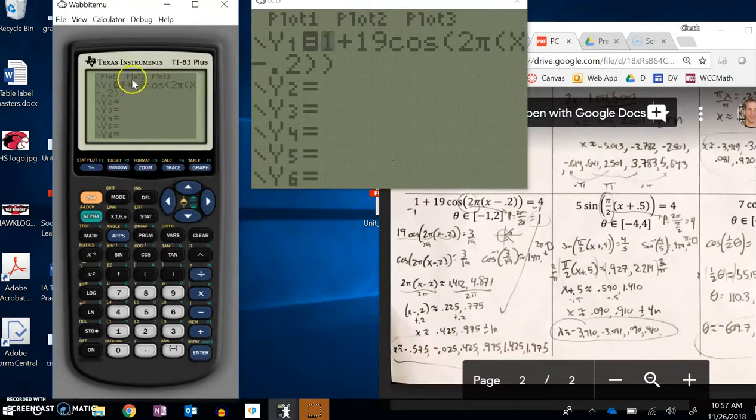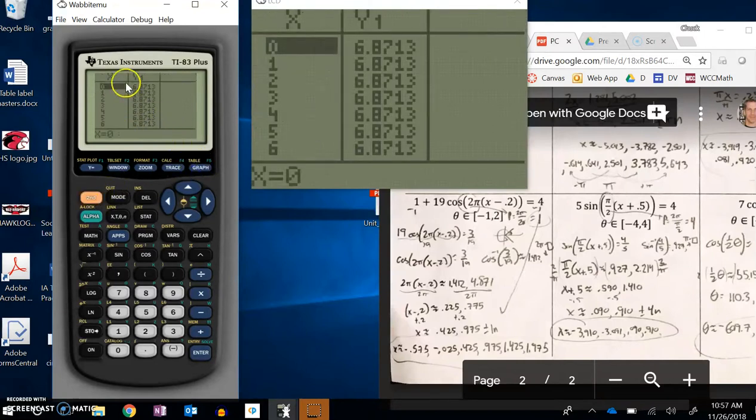I've entered that into my Y equals, just that equation. Now notice I have table up here above graph. If I choose that table, right now this is just spitting out values for different x values—when x is 0, when x is 1. What I want to do is change this so I can input whatever I want. It's not automatically generated.